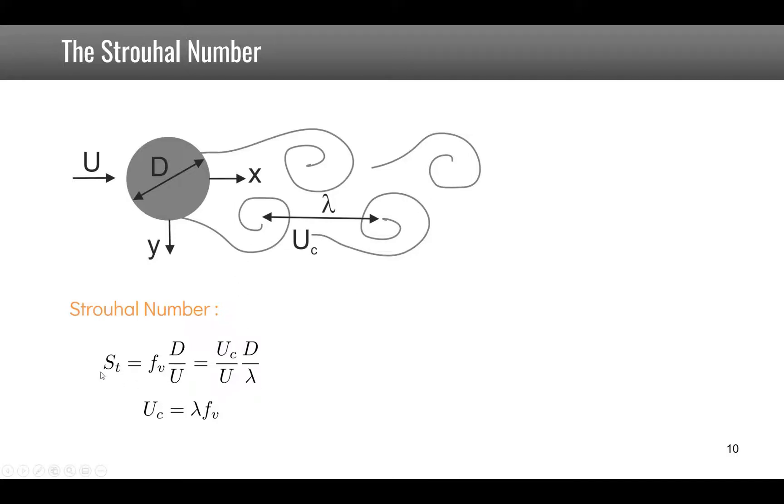So if we replace in this equation fv by uc over lambda we get this expression and we see that the Strouhal number is the multiplication of two factors. The first one is the relative velocity of the flow in the vortices and the incoming flow and the second one is a ratio of the diameter of the cylinder divided by the wavelength of these vortices.